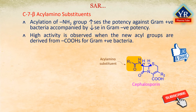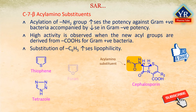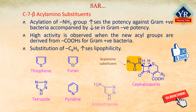High antibacterial activity is observed only when the new acyl groups are delivered from carboxylic acids for gram-positive bacteria. Substituents on the aromatic ring phenyl that increase lipophilicity provide higher gram-positive activity and generally lower gram-negative activity. The phenyl ring in the side chain can be replaced with other heterocycles with improved spectrum of activity and pharmacokinetic properties, and these include thiophene, tetrazole, furan, pyridine, and amino tetrazole.